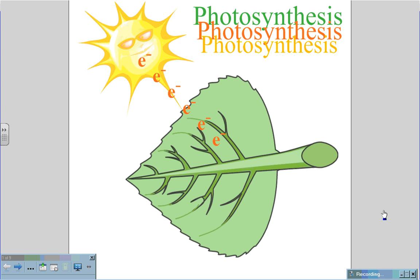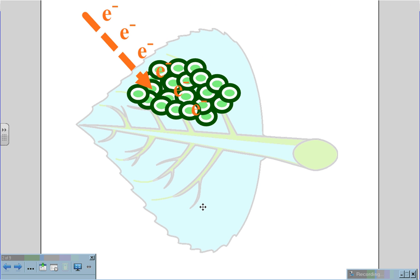Photosynthesis, the process of gathering the sun's energy in plants. Inside the leaf of the plant are millions of tiny organelles called chloroplasts, which are filled with a pigment called chlorophyll.